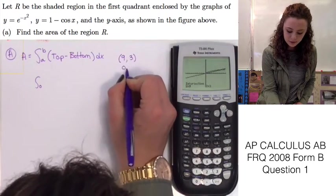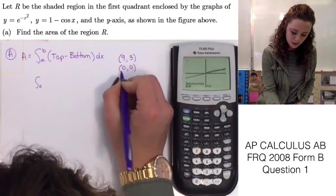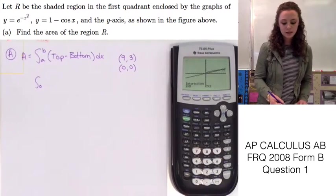We'll write down our two points of intersection of the graph, which is 0, 0 and 9, 3. So we know that our upper limit is going to be 9.